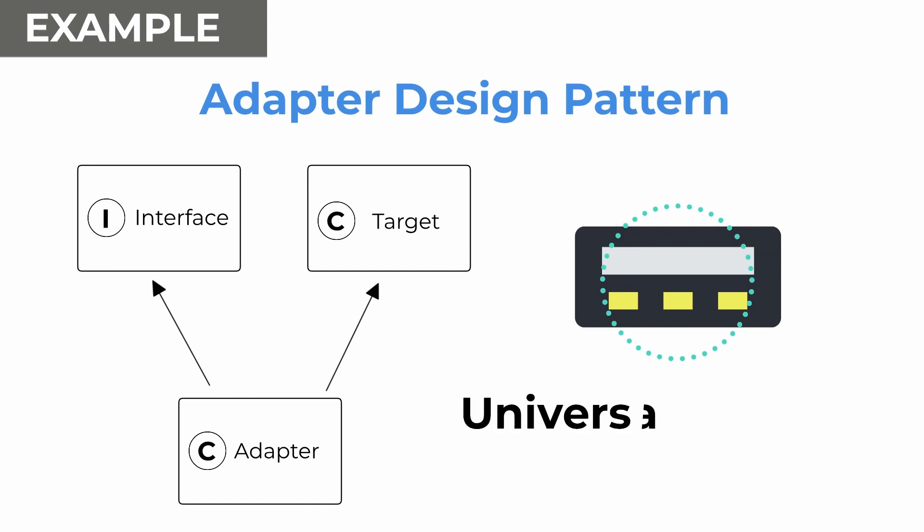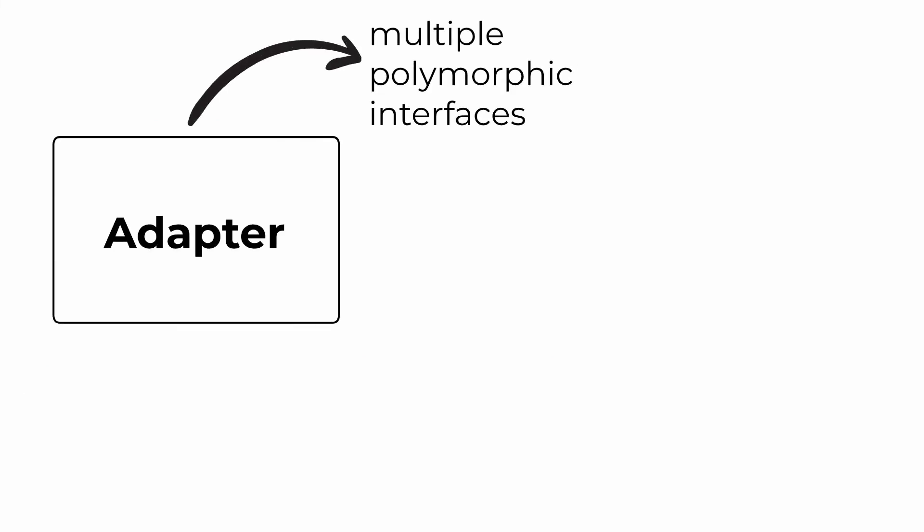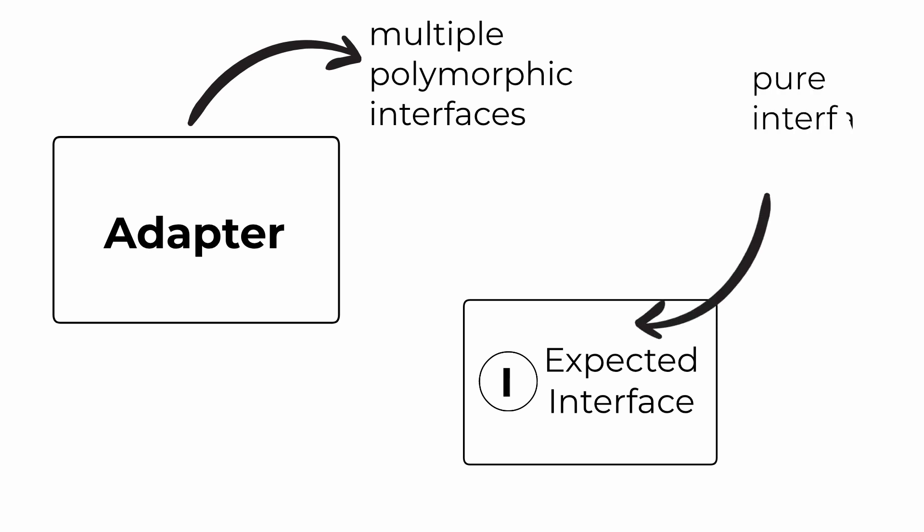This adapter pattern uses multiple polymorphic interfaces implementing or inheriting both the expected interface and the pre-existing interface. It is typical for the expected interface to be created as a pure interface class.